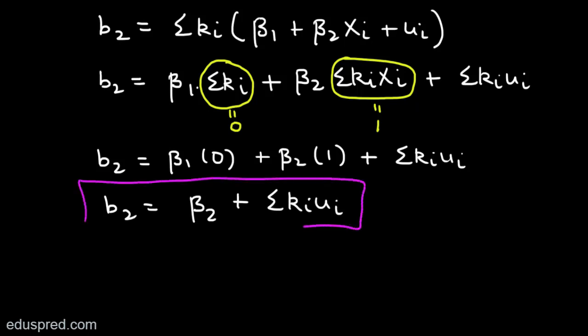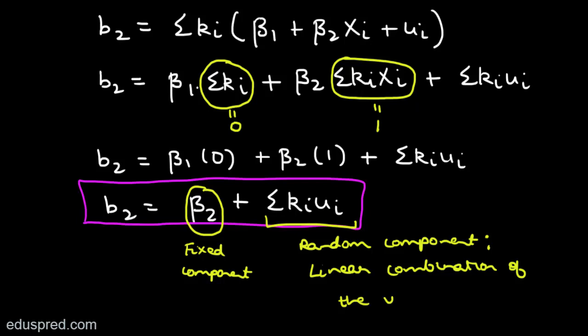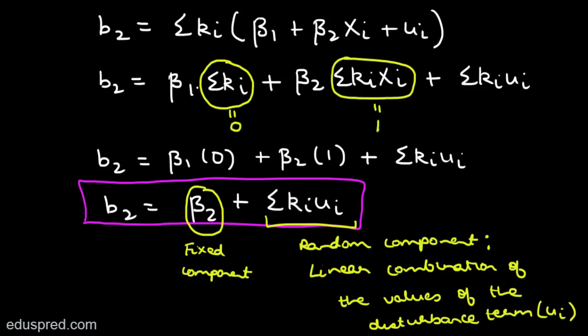This equation is very important. It implies that B2 equals a fixed component — the true population parameter beta2 — plus a random component ΣKi·ui, which is random because it contains the disturbance term. B2 is thus a linear combination of the disturbance term values ui. This equation is also extremely important for exams, where you may be asked directly to write B2 as a linear combination of the disturbance term. I will also use this equation in the proof of efficiency in the next lecture.